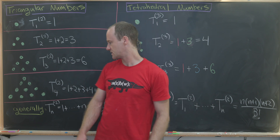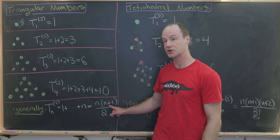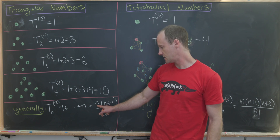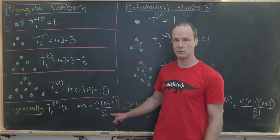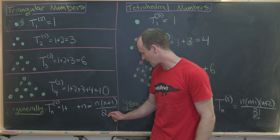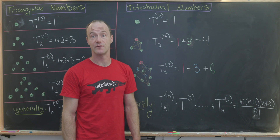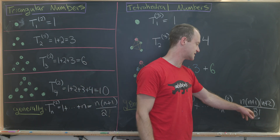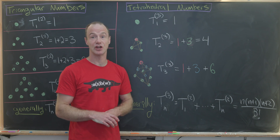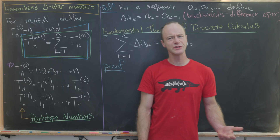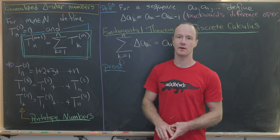Let's compare the two formulas. For triangular numbers we have a rising product of two terms — n times (n+1) — over two factorial. For tetrahedral numbers we have a rising product of three terms — n times (n+1) times (n+2) — over three factorial. This motivates something happening in general, and our goal for this video is to look at generalized triangular numbers.